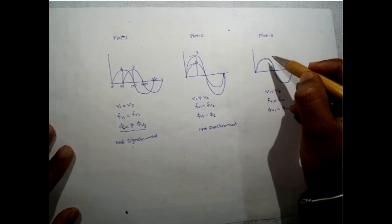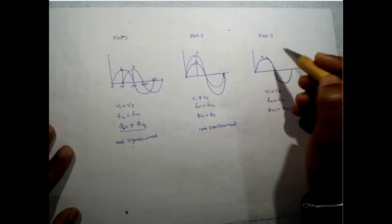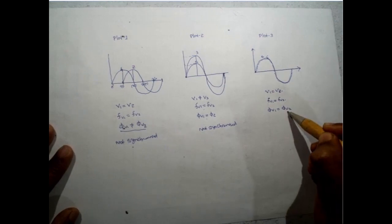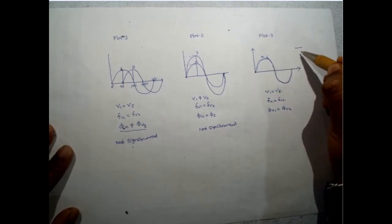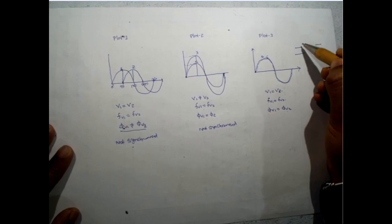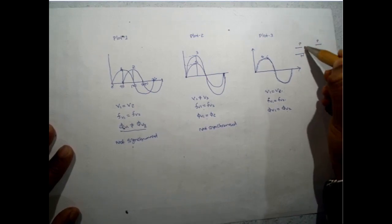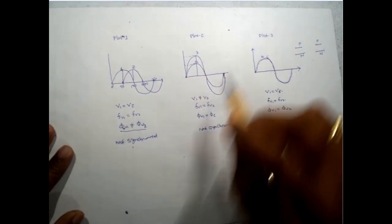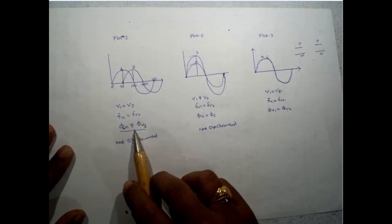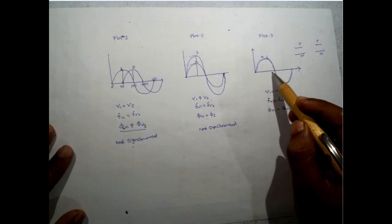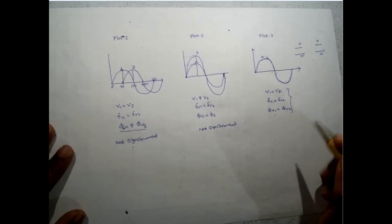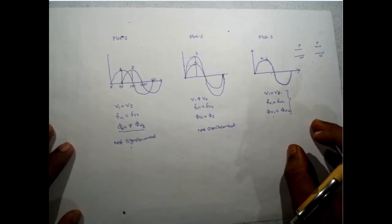Now consider waveforms 5 and 6: the two waveforms overlap each other because of same magnitude, same frequency, and same phase. The phase sequence is also matched — meaning the source connections are phase to phase, neutral to neutral. This is plot 3, which is synchronized because of matching of all four parameters. This is about the synchronization of AC signals.